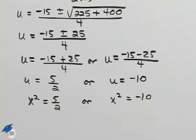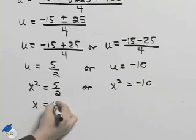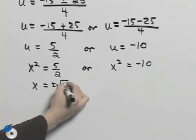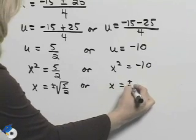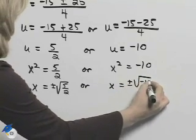By the square root property, I will take the square root of both sides and I will get x equal to plus or minus the square root of 5 halves or x equal to plus or minus the square root of negative 10.